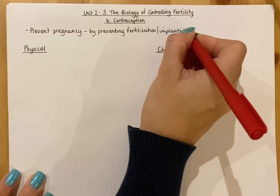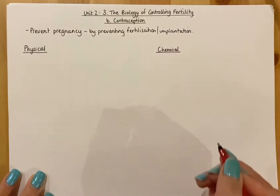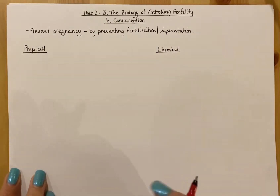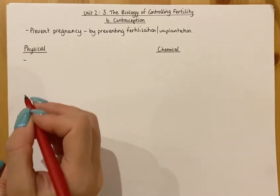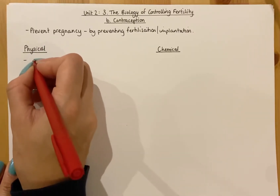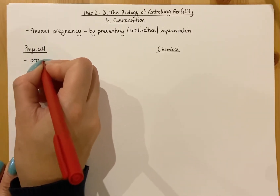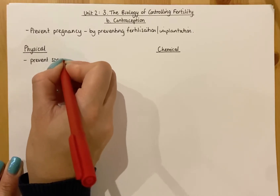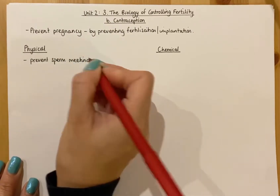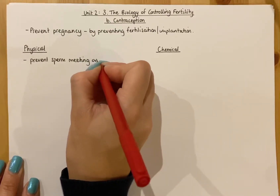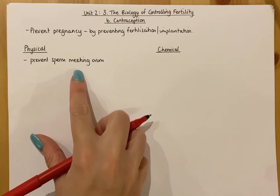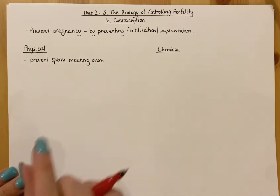Contraception works in a number of ways, and there are generally two different types that we focus on in the Higher Human course. The first one is physical. Physical methods will generally focus on preventing sperm from meeting an ovum, and therefore prevent any kind of fertilization — though they're not exclusively that.